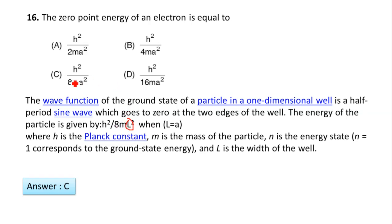The energy of the particle is given by n²h²/(8mL²) when n=1. Where h is the Planck constant, m is the mass of the particle, n is the energy state (n=1 corresponds to the ground energy), and L is the width of the well. Answer C is correct: h²/(8mL²).